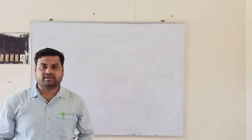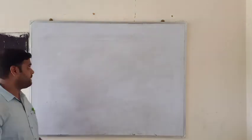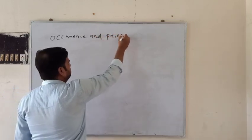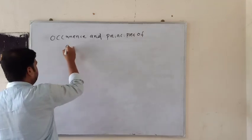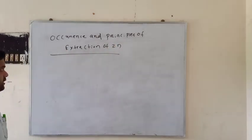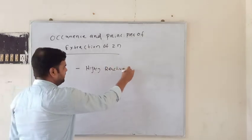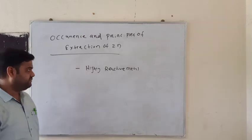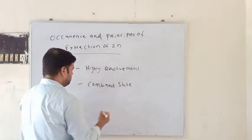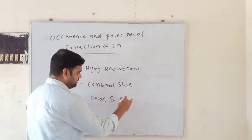Good morning students. In the previous class, we discussed the extraction of copper, but today we are going to learn about the extraction of zinc — the occurrence and principle of extraction of zinc. Zinc is a highly reactive metal, and reactive metals are generally found in compound states such as silicates and carbonates.